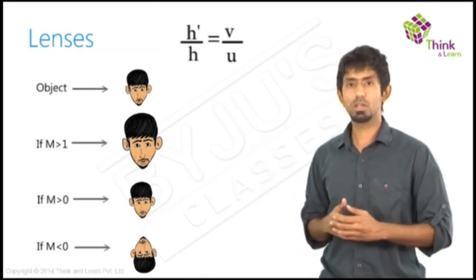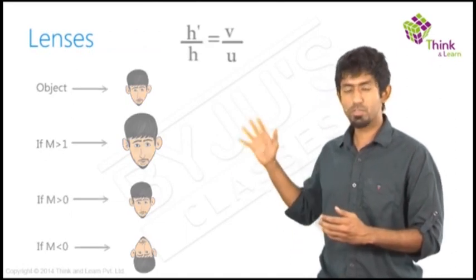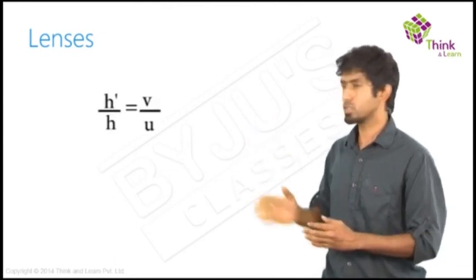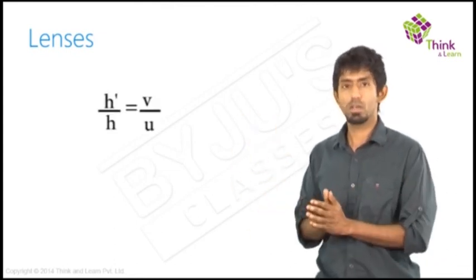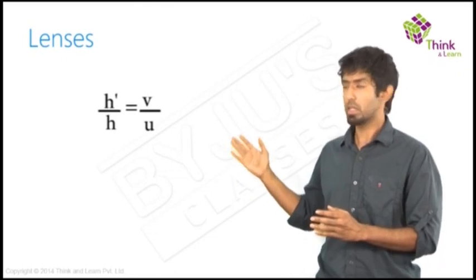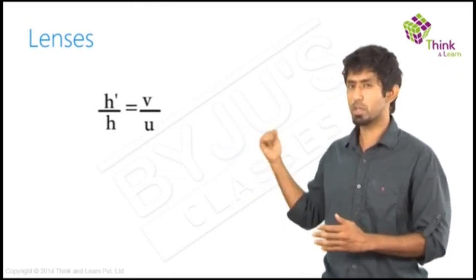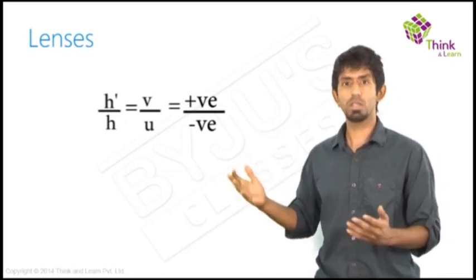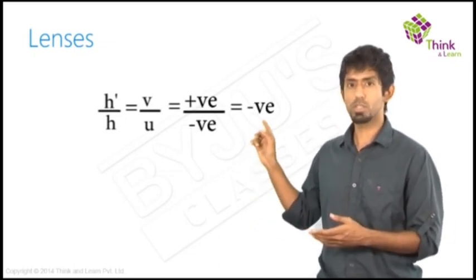So we are trying to get as much information as possible from that little quantity called magnification. So in the case of lenses, what do we see? If we keep it H dash by H as V by U, therefore the magnification will be just V by U. Because like you can see, in all the cases, wherever V by U you calculate, let's take a normal case like that. What happens when you calculate V by U? V is positive, but U is negative, so you get the value as negative. Great, which is what you want because the image is inverted.